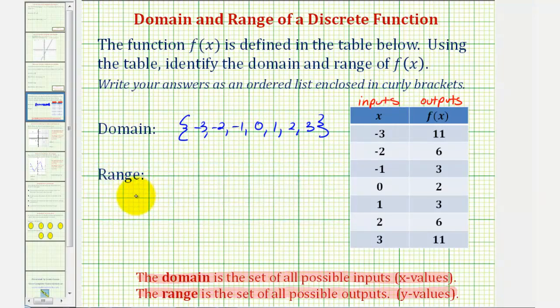And the range is a set of all possible outputs, which are given here. Notice how we do want to list two first, because it's the smallest value. Then notice how three would be the next value. It does occur twice, but we do not list the repetition, we only list it once. From there we would have six, and then eleven.